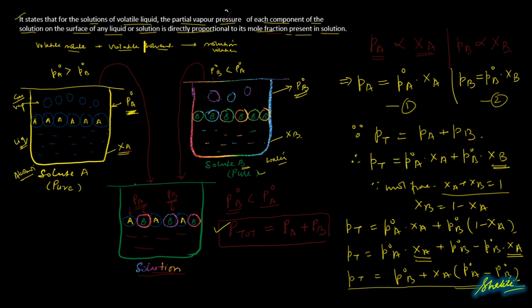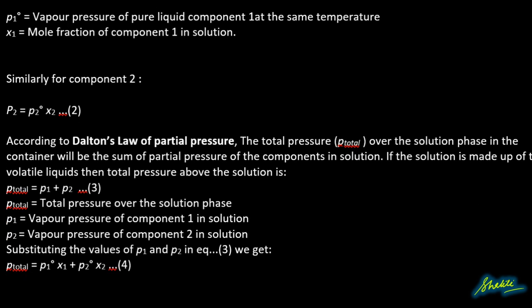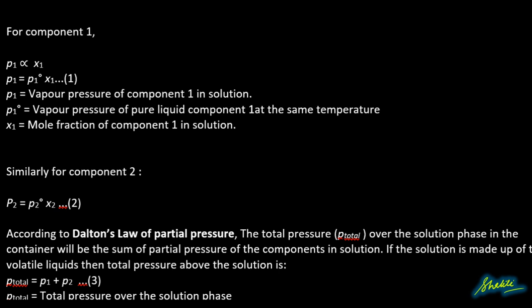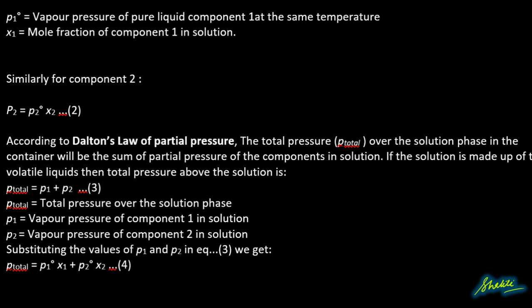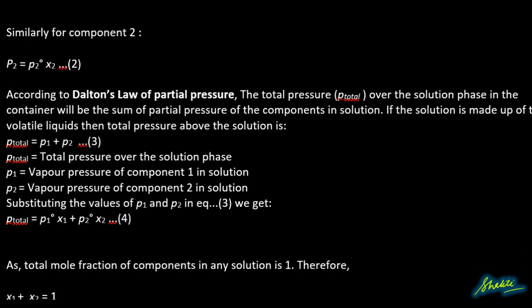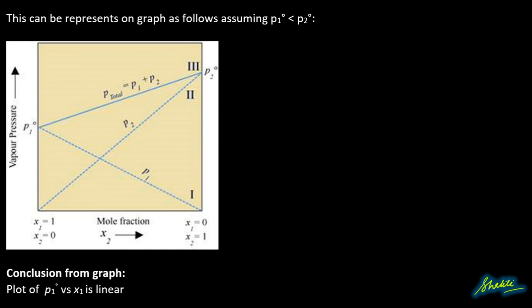Students can take a screenshot of this. Now, P1 is directly proportional to x1, and for component 2, p2 = p2° · x2. According to Dalton's Law of partial pressures, the total pressure over the solution phase in the container is the sum of partial pressures of all components. If the solution is made up of volatile liquids, then total pressure above the solution is P_total.